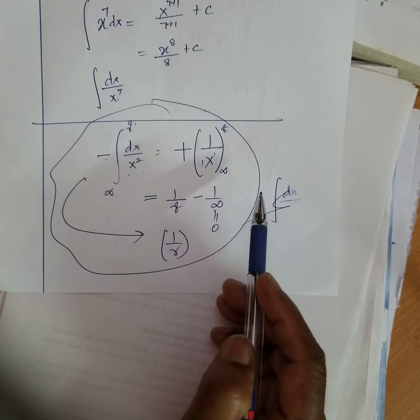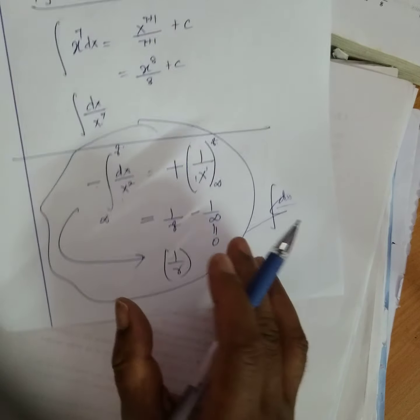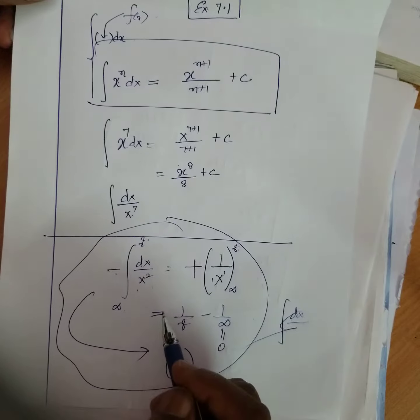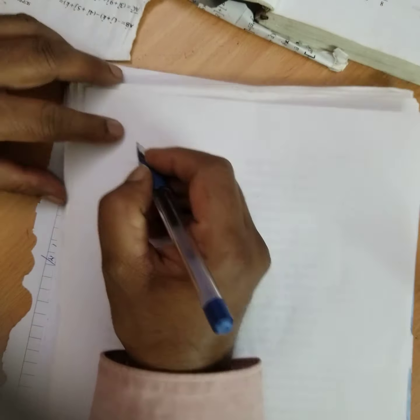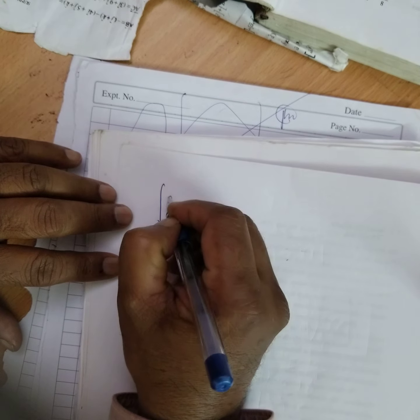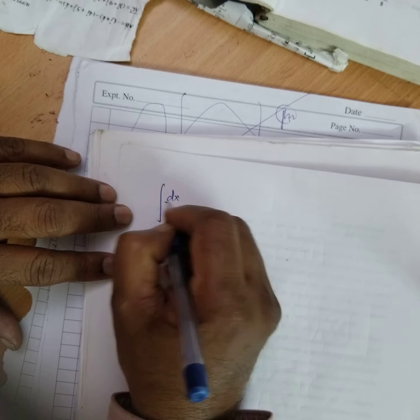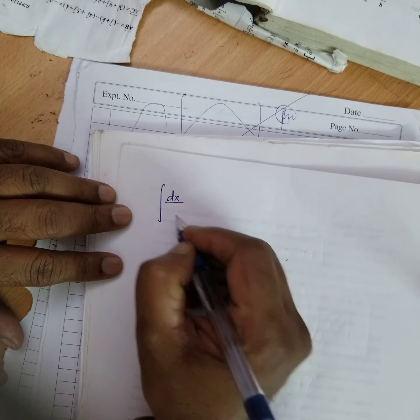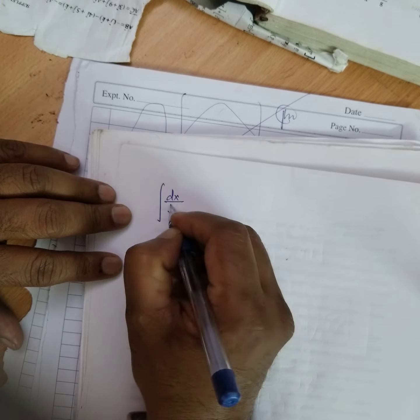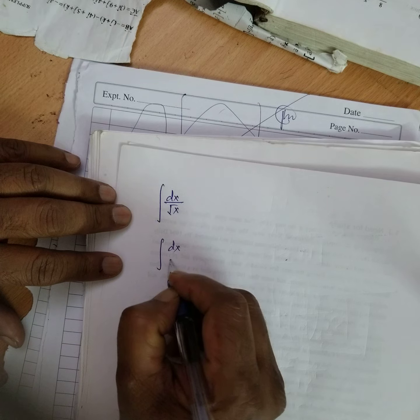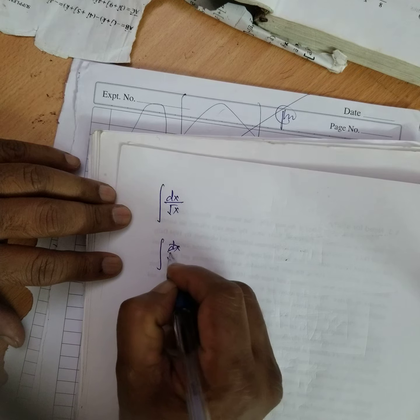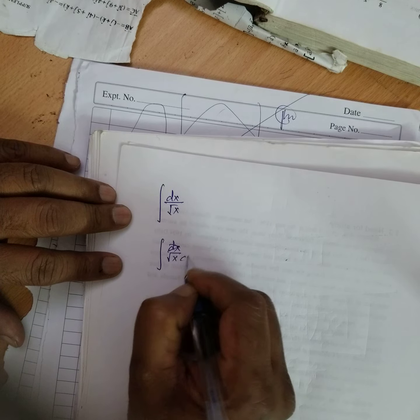Integration is also used in chemistry — for example, in the rate of chemical reactions. Now, consider the integral of dx by root x.